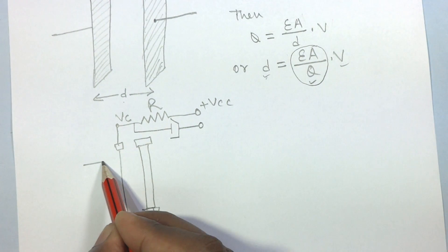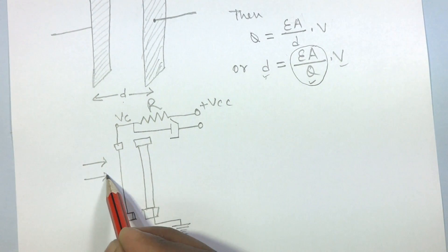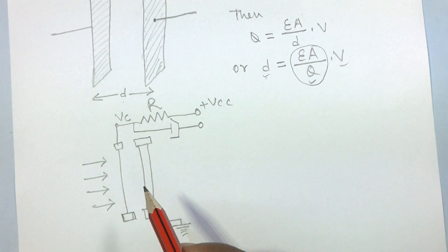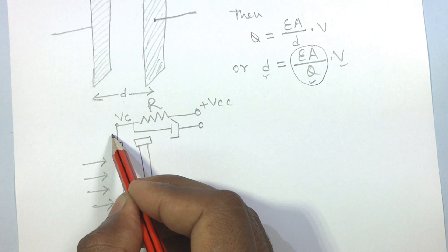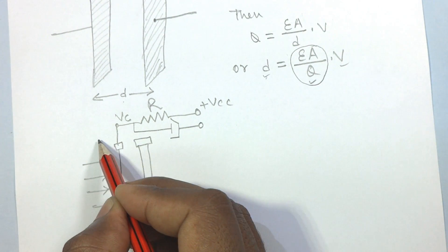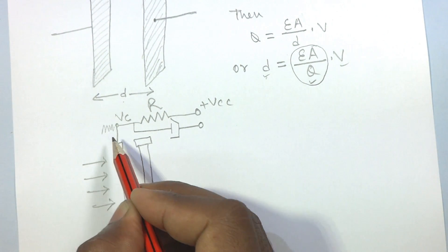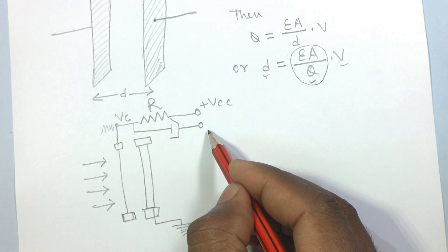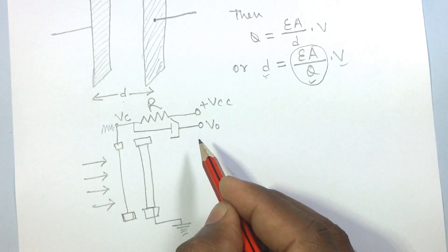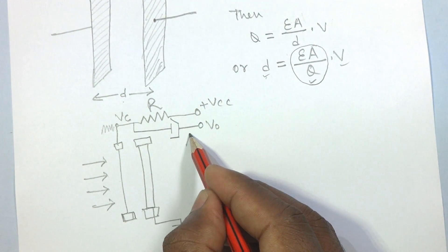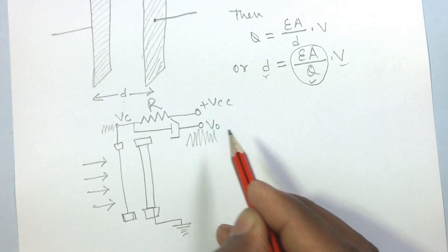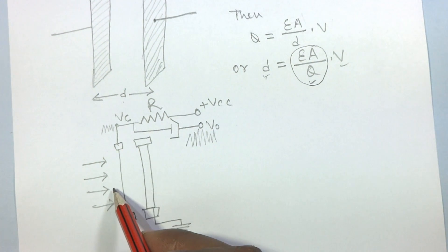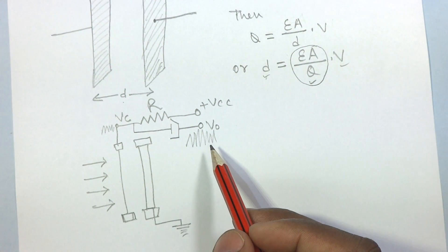When the sound pressure hits this plate, it begins to vibrate and an AC signal is produced corresponding to sound pressure. We take this AC signal through this coupling capacitor as VO. This signal will be like this. And this way the condenser microphone converts the sound wave into electrical signal.